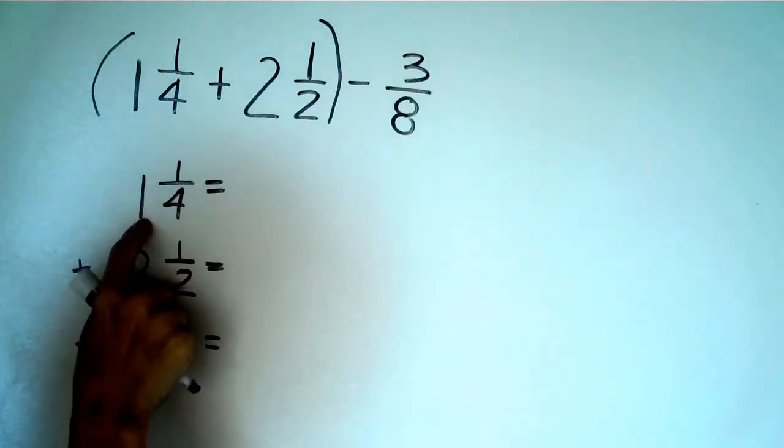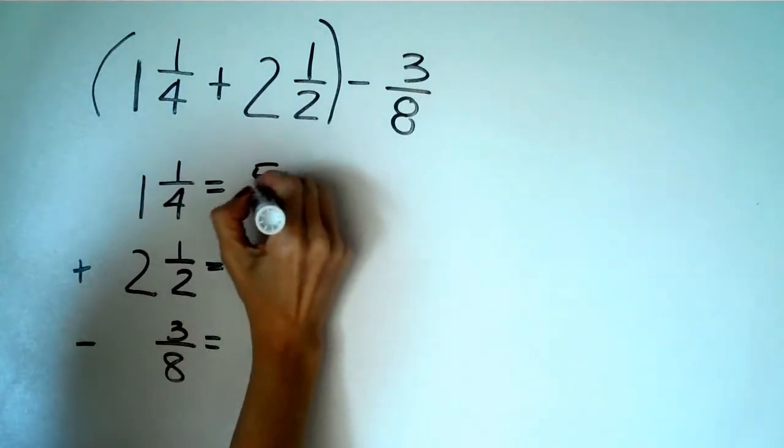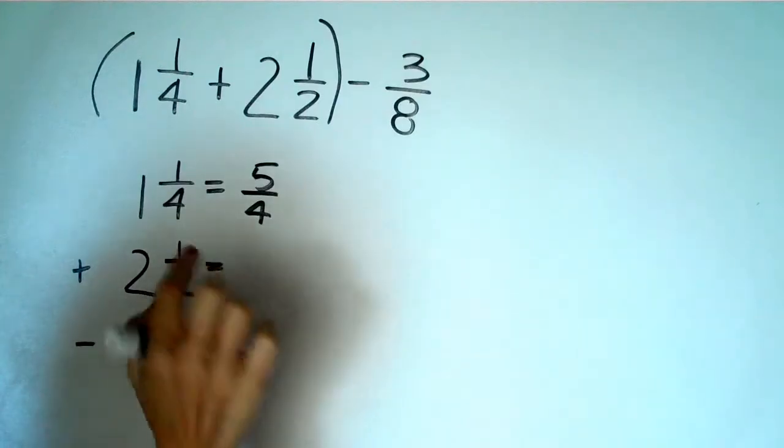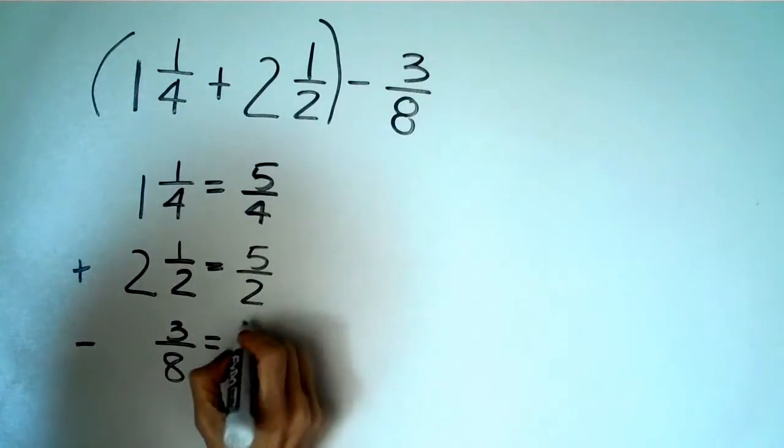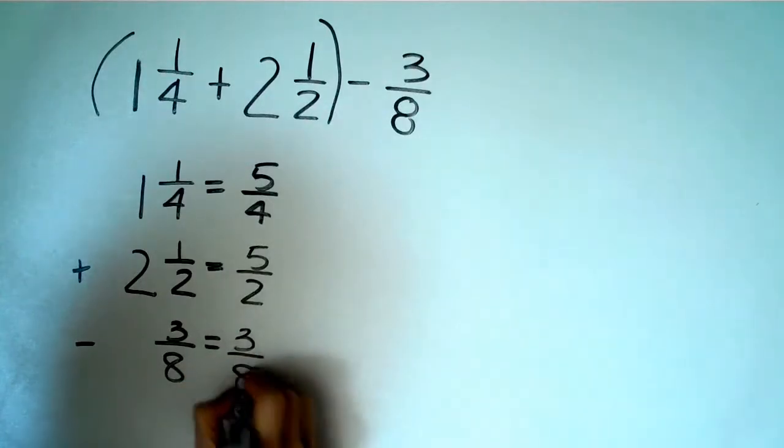And I'm just going to change these numbers from mixed numbers into improper. So four times one is four plus one is five over four. And two times two is four plus one is five over two. And this is already a fraction. So we can just leave it like that.